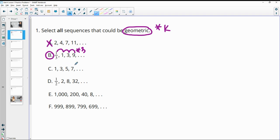Part C is going up two each time, plus two. So we're adding. So that is not a geometric sequence.